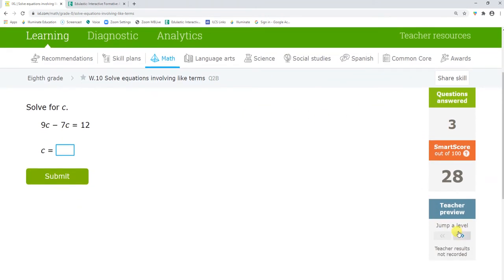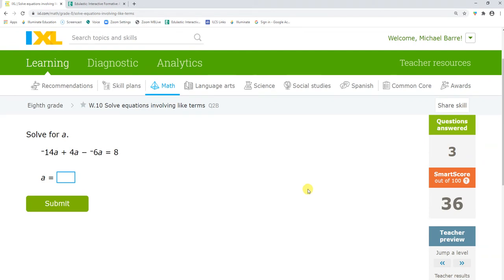Now something I'm able to do is I'm able to jump a level. So I'm going to jump up to the next level. So right here, you see the two negatives in a row? When I have two negatives in a row, I call it a boom boom. It turns into a positive. So I have negative 14a plus 4a. That's going to take me to a negative 10a. And to that, I'm going to add a 6a. And that's going to take me to negative 4a equals 8. Dividing both sides by negative 4, a equals negative 2.